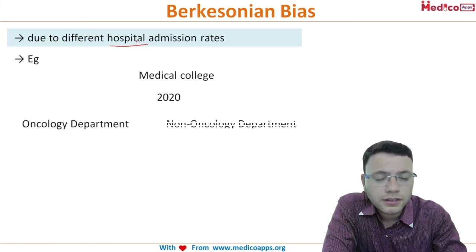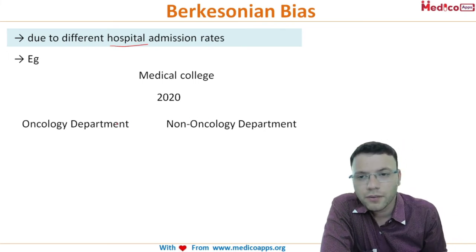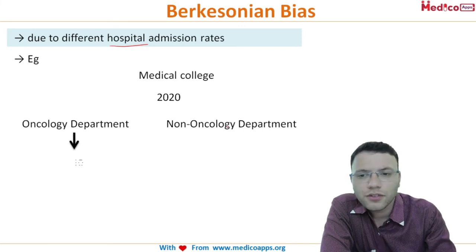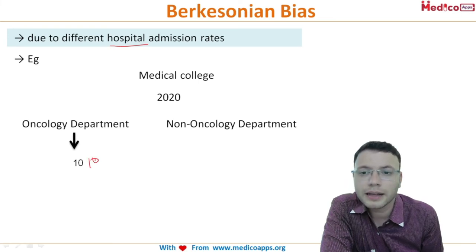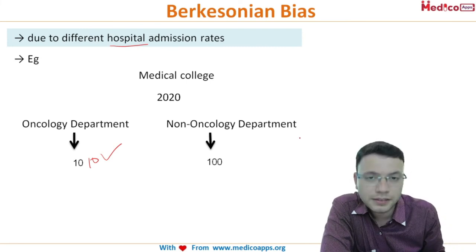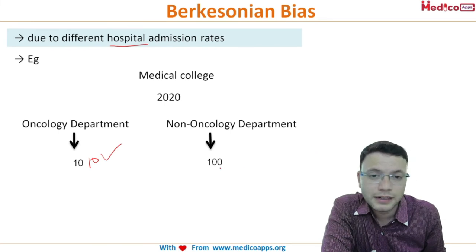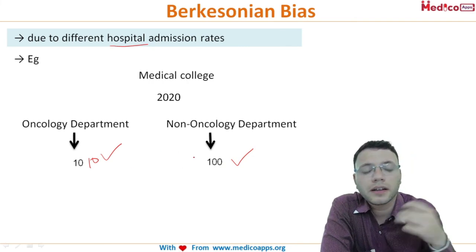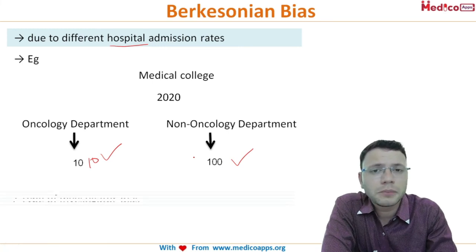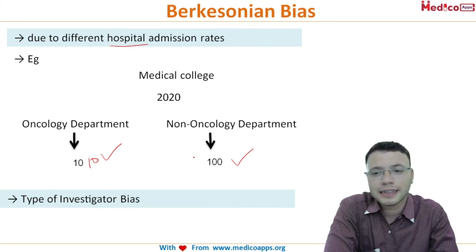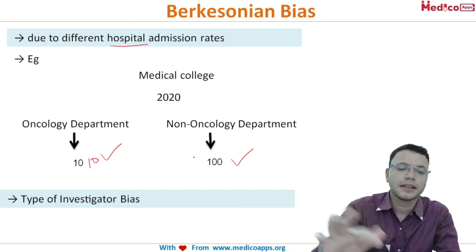For example, in a medical college study in 2020, cases are taken from the oncology department and controls from a non-oncology department like medicine. The oncology department may have just 10 cases, while the medicine department has many more. This difference in case numbers across departments creates a different case-to-control ratio, resulting in Berkson's bias — a type of investigator bias.